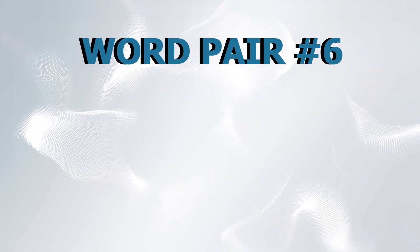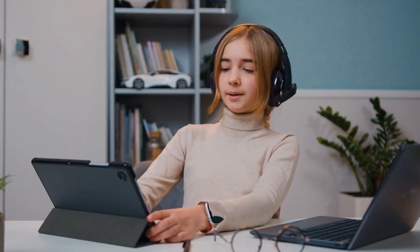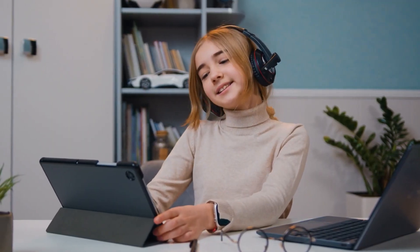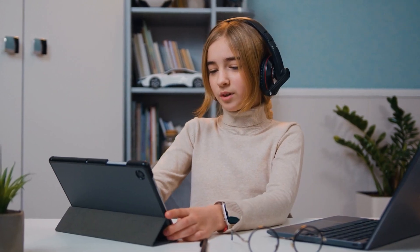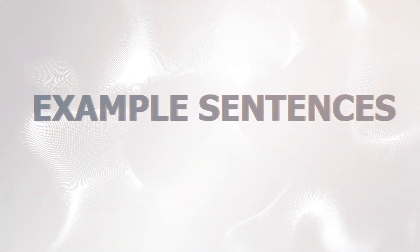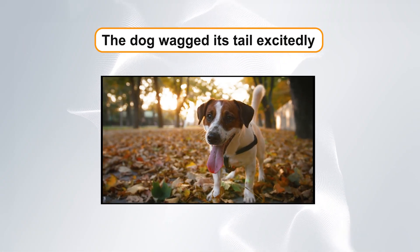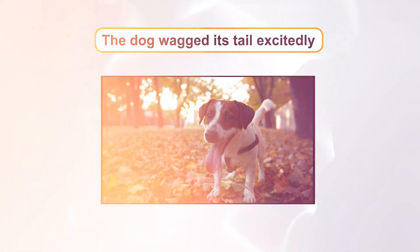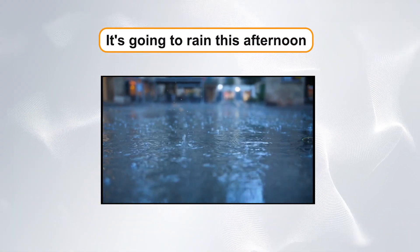Word pair number six: its versus it's. Next, we have its and it's. Its is a possessive pronoun, meaning belonging to it, while it's is a contraction of it is or it has. Example sentences: One, the dog wagged its tail excitedly. Two, it's going to rain this afternoon.